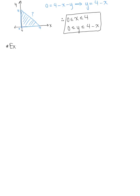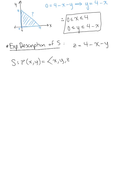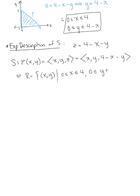Now, given our explicit description of the surface — the tetrahedron z = 4 - x - y — we define this explicitly as a vector-valued function in terms of x and y: r(x, y) = (x, y, 4 - x - y), where our region R is the set of all ordered pairs with x in [0, 4] and y in [0, 4 - x].